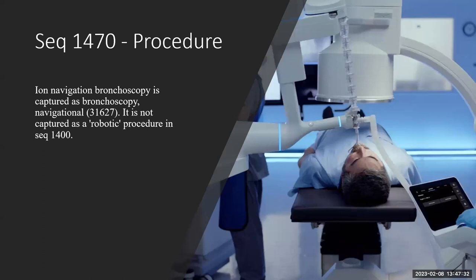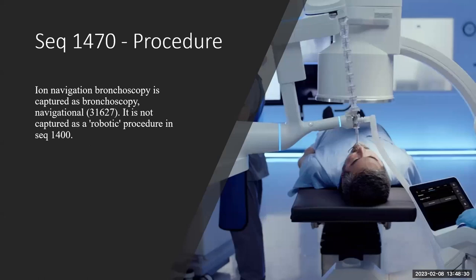Sequence 1470 — Procedure: Ion navigational bronchoscopy should be captured as 'Bronchoscopy Navigational.' It is not captured as robotic, even though it is sold by Intuitive, which also makes robotic lobectomy systems. It is not considered a robotic procedure for sequence 1400. Additionally, a March training manual update will clarify that EBUS used for biopsy of a peripheral nodule in the context of ion navigational bronchoscopy is not mediastinal staging — they are not staging the mediastinum but using an EBUS scope for peripheral review.